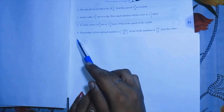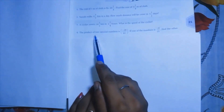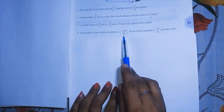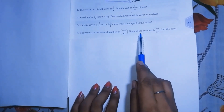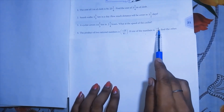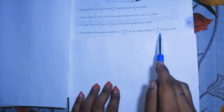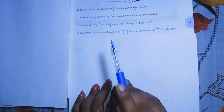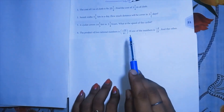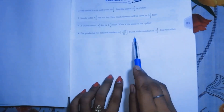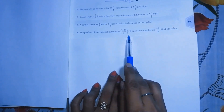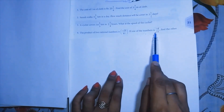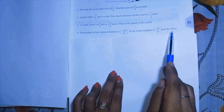Question number 4: the product of two rational numbers is minus 28 by 81. If one of the numbers is minus 4 by 15, find the other number. When we multiply two numbers we get this result, and one number is given — so we need to find the next number.